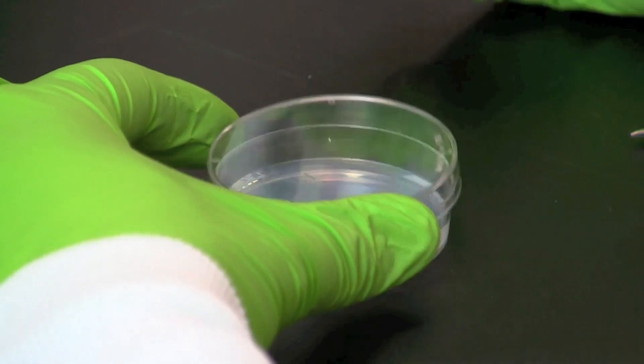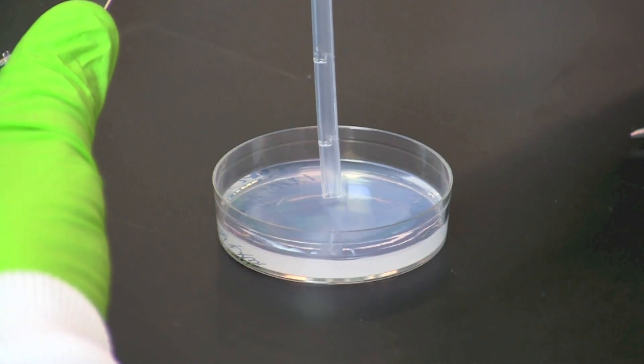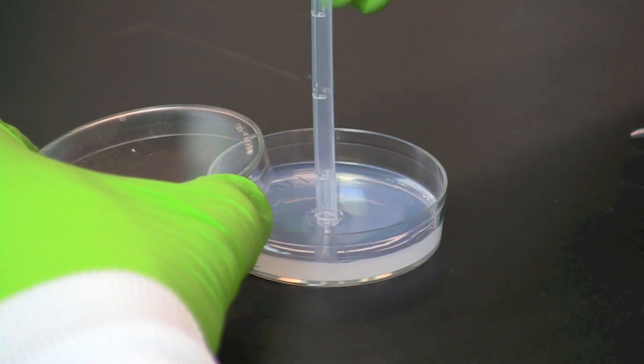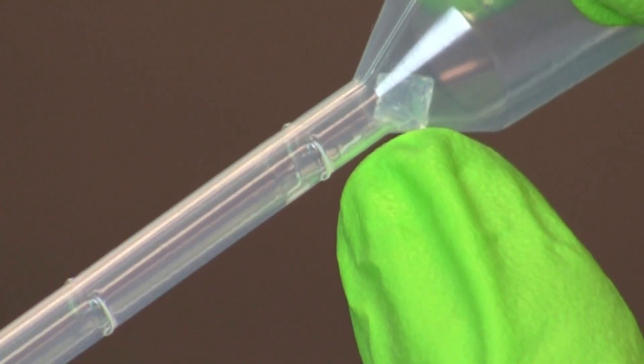Start by punching a hole in the center of the assay plate. Squeeze the bulb of the transfer pipette and press the tip of the pipette into the agarose. Release the bulb to suck out the small plug of agarose. You should be able to see a small plug of agarose in the bulb of the pipette.